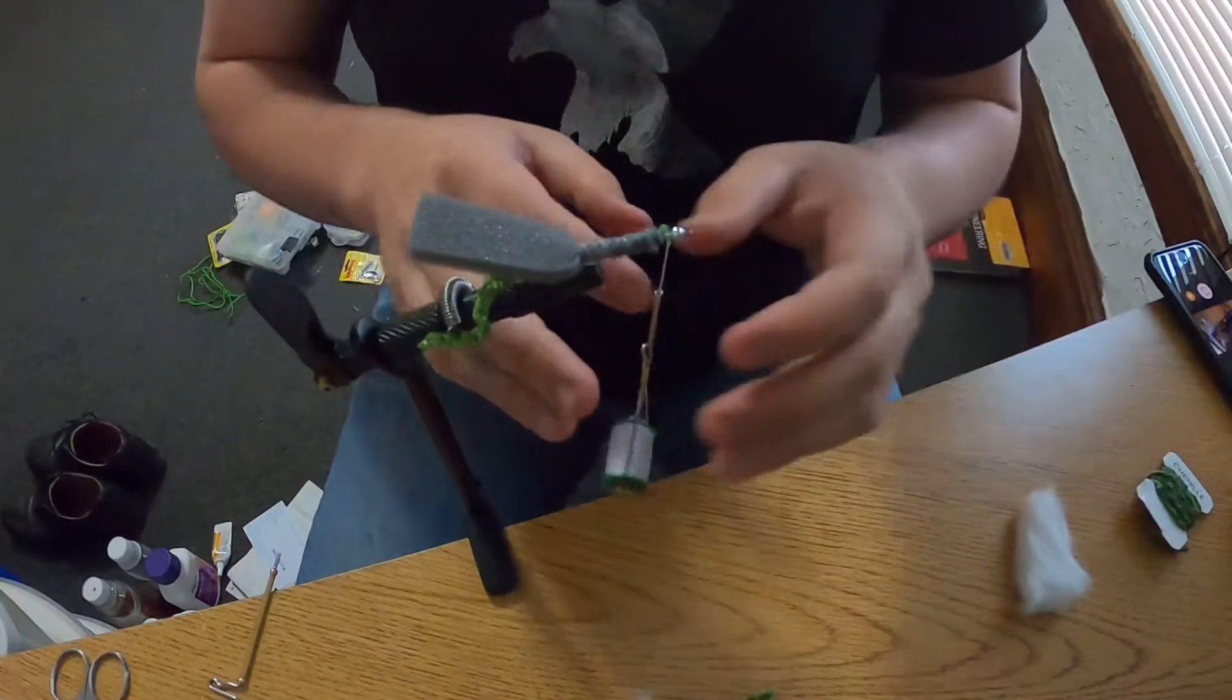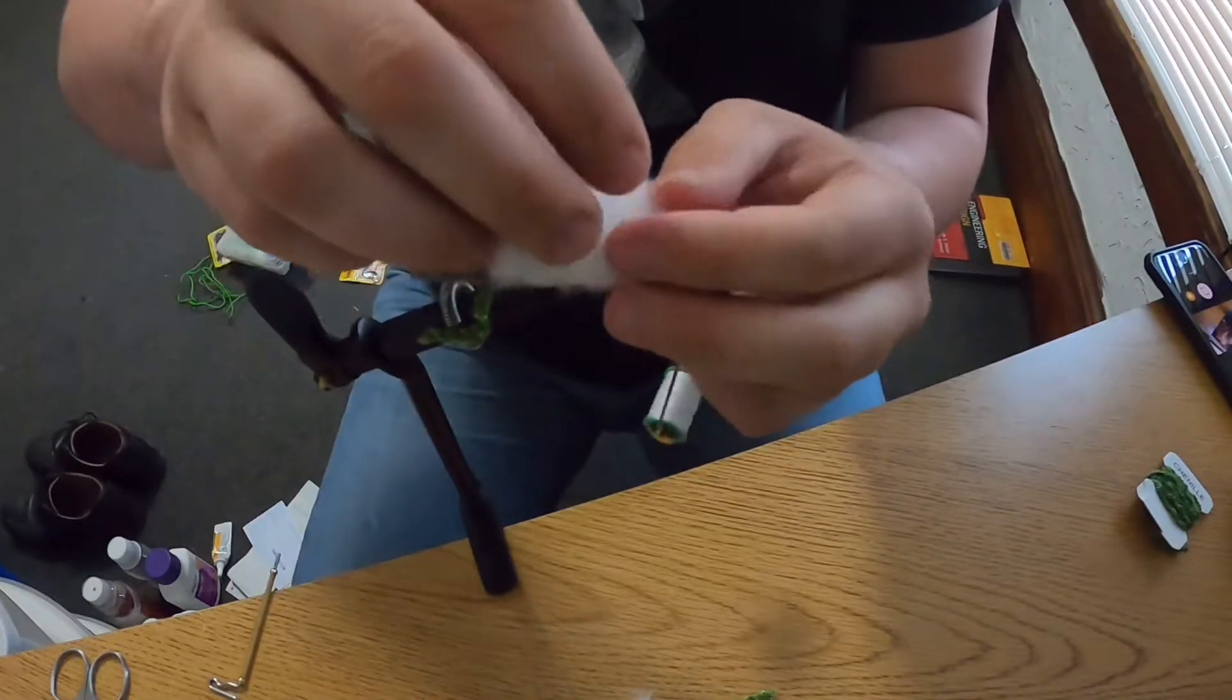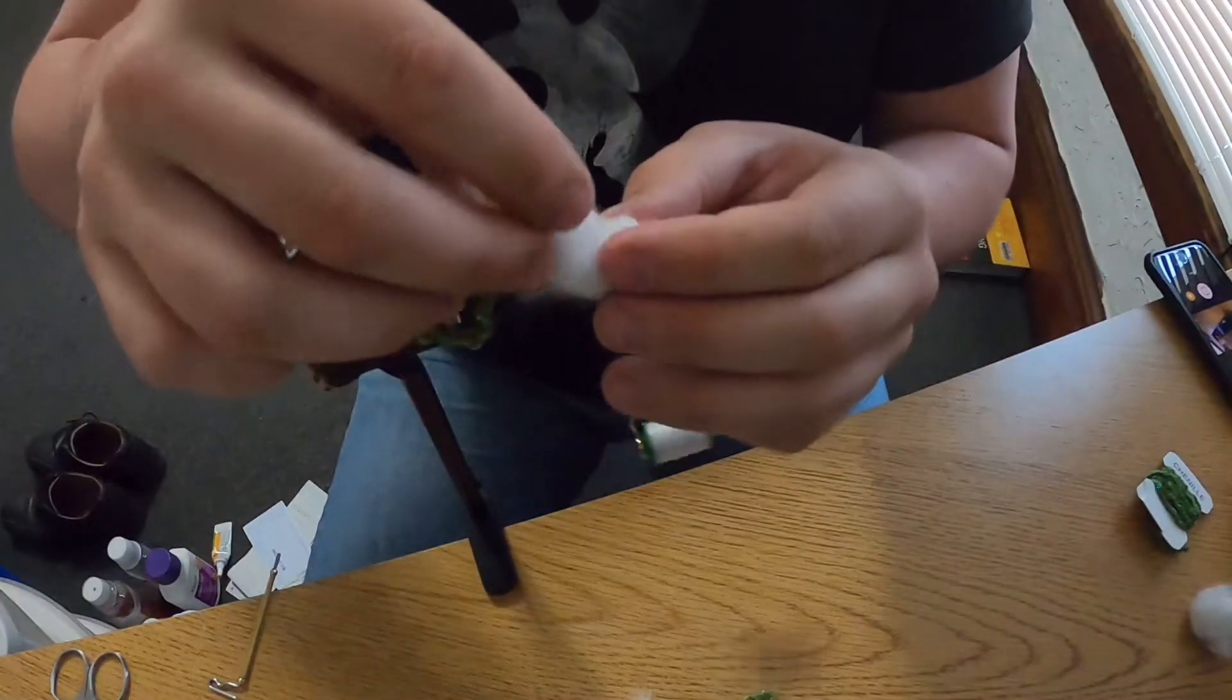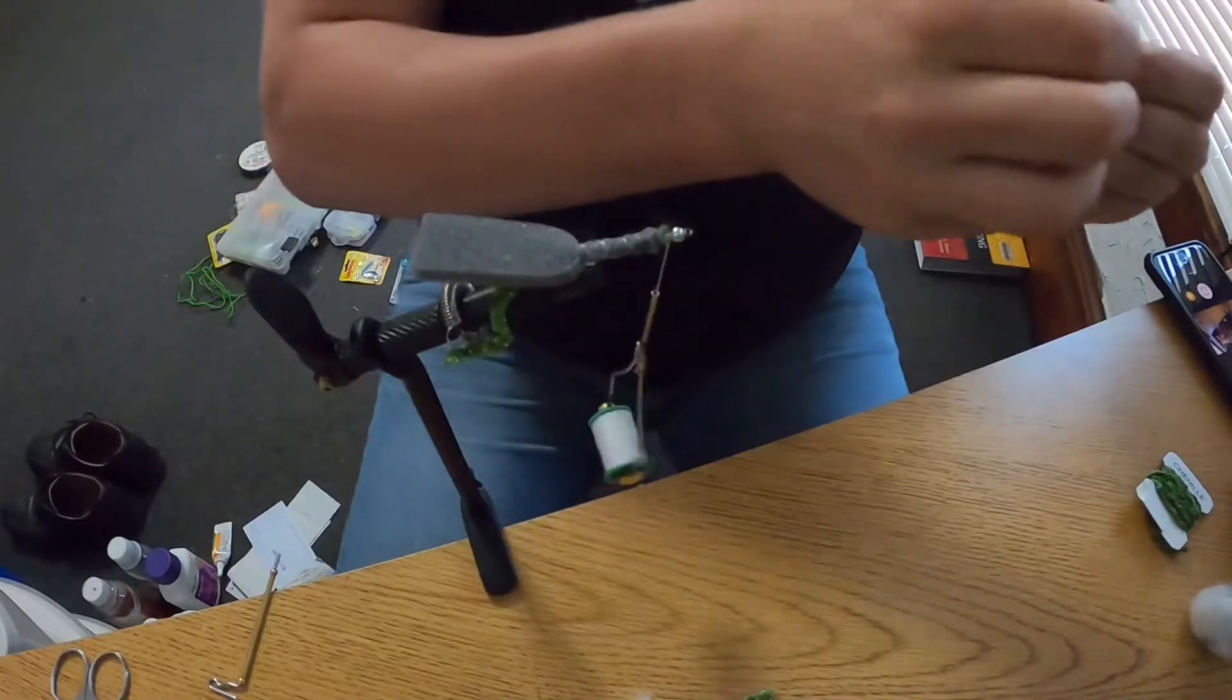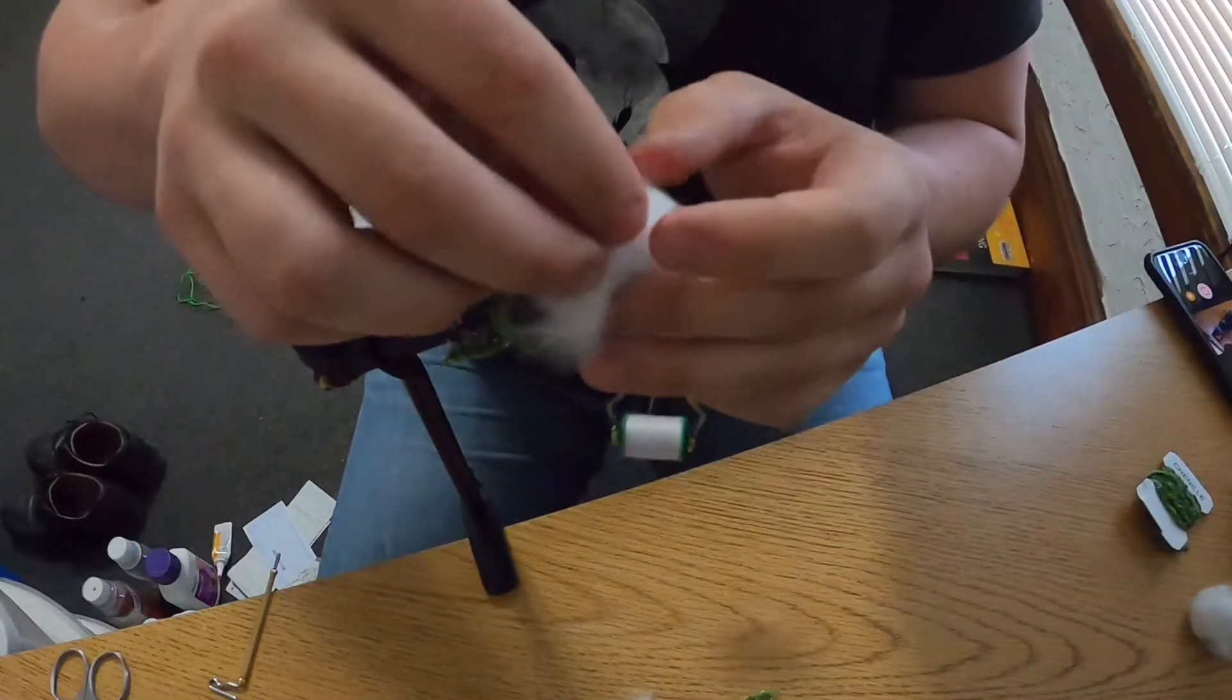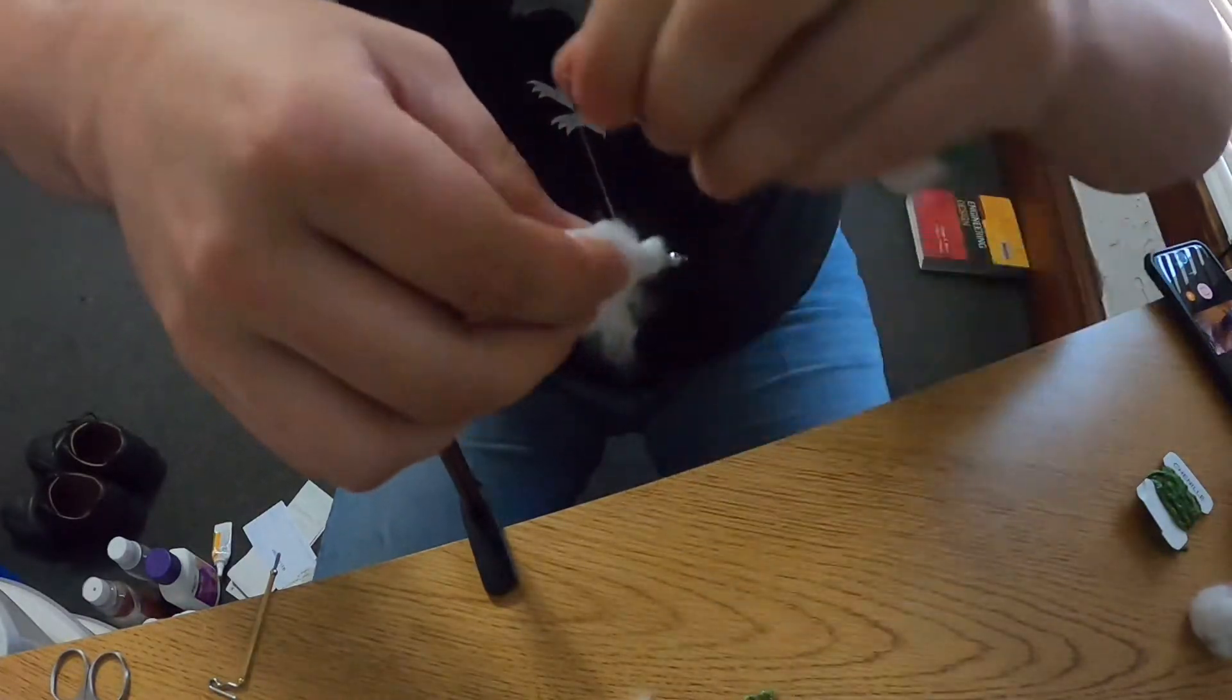But first, putting some of this on the top, the stuffing. I get rid of some to reduce the volume because the fish seem to like nice thin, weak looking mice. Alright, start wrapping that up in there.